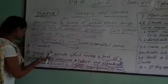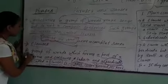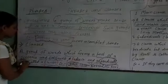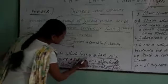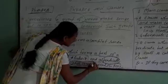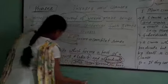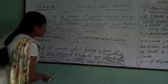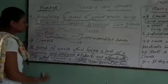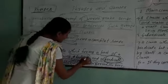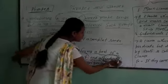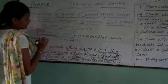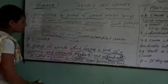Now, clauses. A clause means a group of words which forms a part of a sentence and contains a subject and a predicate. A group of words which contains a subject and a predicate is called a clause.